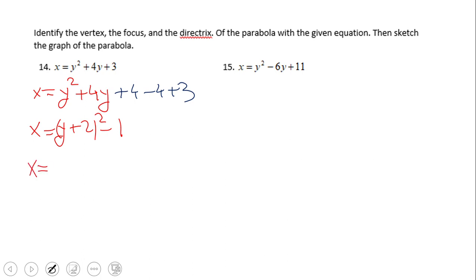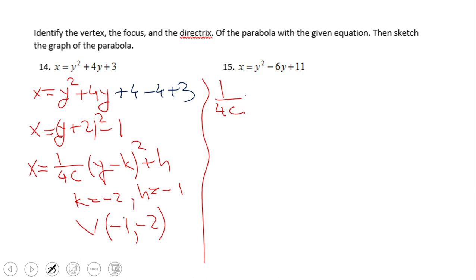Okay, and now I'm going to write that equation I just mentioned a little while ago: 1 over 4c times y minus k squared plus h. The first thing we can see is that k is negative 2 and h is negative 1, which gives us the vertex of, be careful here, h is the x-coordinate of the vertex, so negative 1 and negative 2. Now, similar to the previous problem, we have 1 over 4c equals 1, which is going to give us c equals 1 fourth.